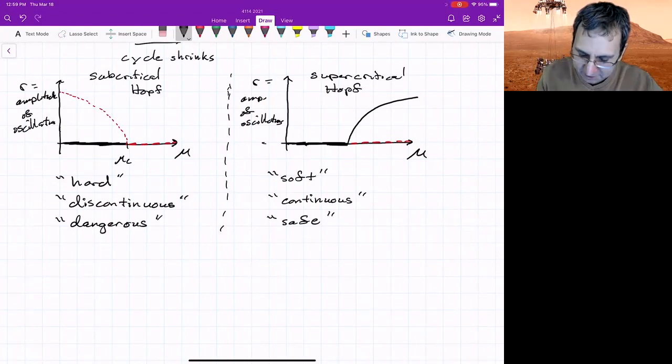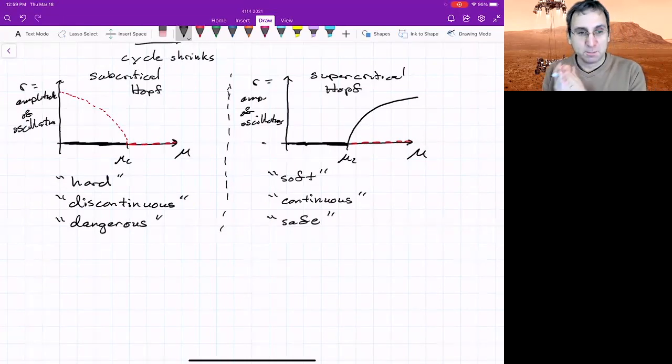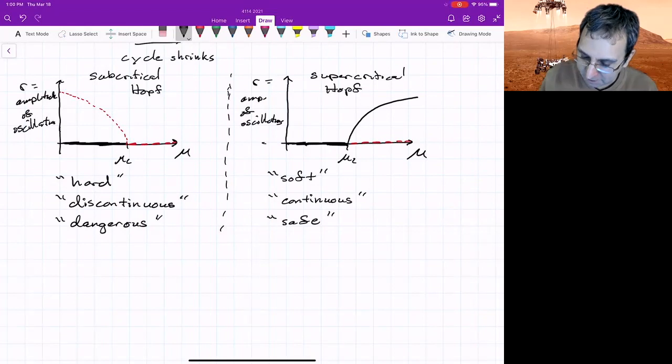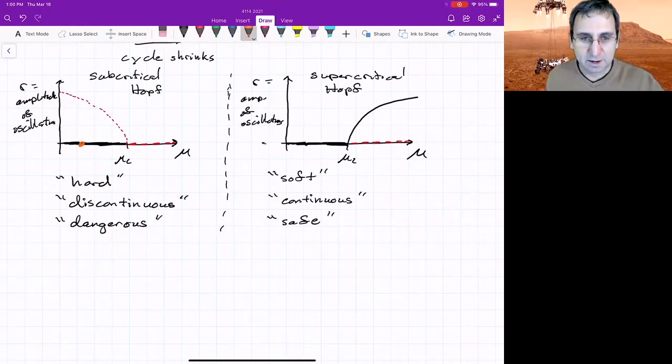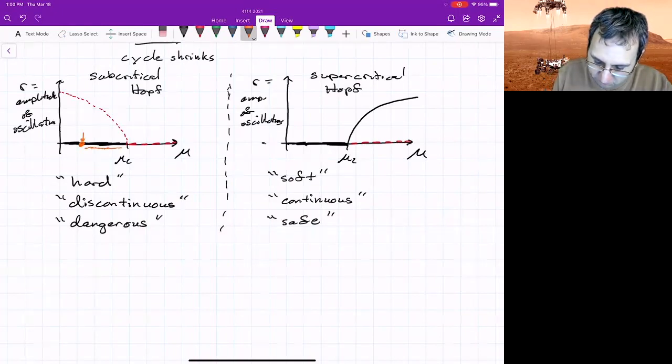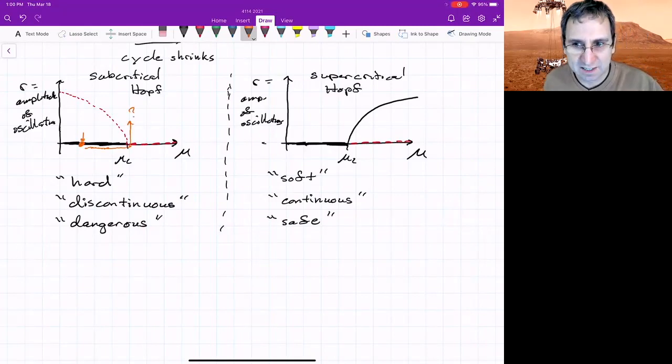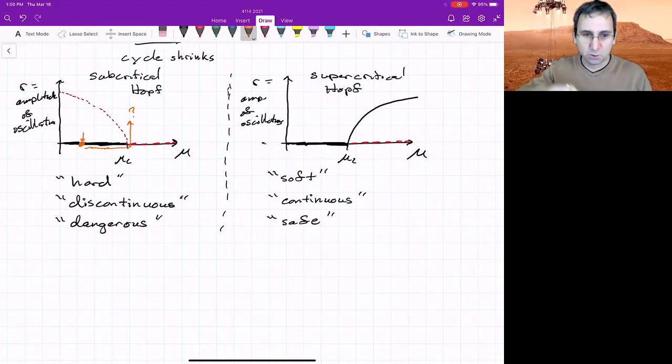And why is it dangerous? What's going on? Why is this considered soft, continuous and safe? Well, if I am at, let's say I've got a system where I've got some mu that's before the critical point and I'm marching along, we'll use orange. So if I'm say at this point, if I get a little bit of a perturbation, it pushes me back. It's nice and stable. As I go along, changing the parameter. Well, at some point that fixed point goes unstable.